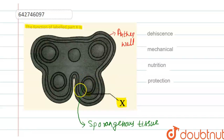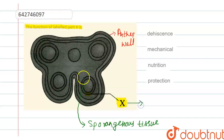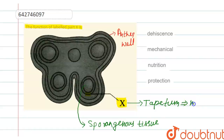There is an outer layer — cells are present at the outermost layer of the sporanginous tissue. These cells are known as tapetum. So X is the outermost covering of cells, which is known as tapetum. These tapetum cells are the nutritive cells.